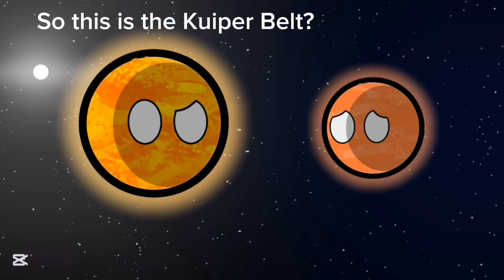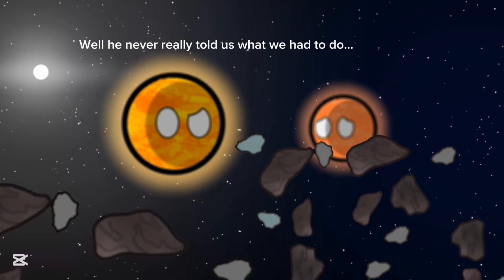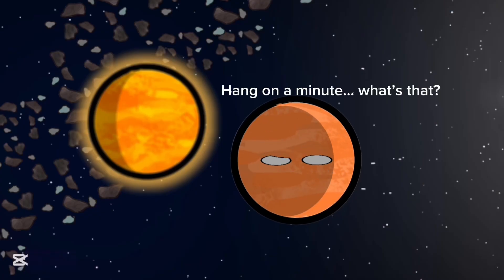So this is the Kuiper Belt. Well, this is where Ganymede directed us. Well, he never really told us what we had to do. Hang on a minute. What's that?